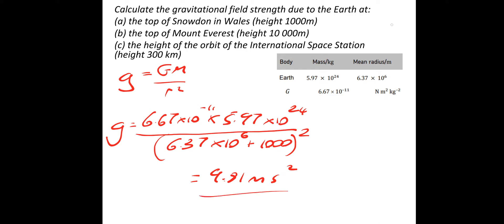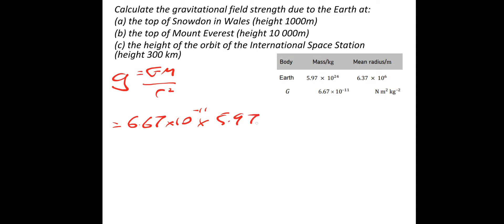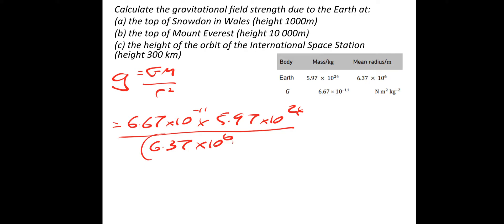At the top of Mount Everest it's the same equation: g equals GM over r squared. So 6.67×10⁻¹¹ multiplied by the mass of the Earth 5.97×10²⁴, divided by the radius squared — that would be 6.37×10⁶, this time adding 10,000 metres — remember to square that. And that gives a gravitational field strength of 9.78 metres per second squared.